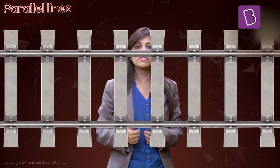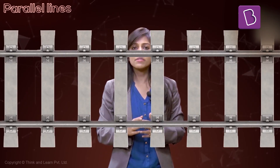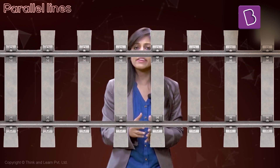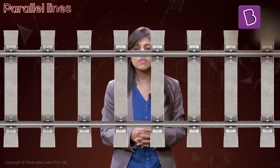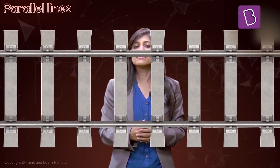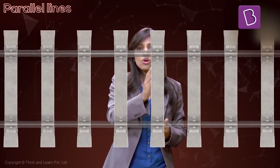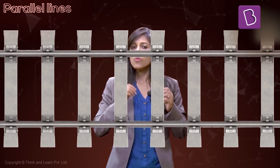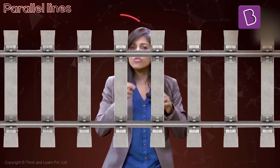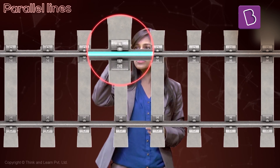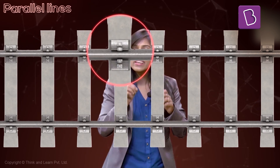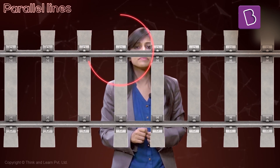To put things into action, let me show you a railway track, where you can see both intersecting lines and parallel lines. If you have a look at it, the ends of the track are parallel to each other — these are all parallel lines. And if you observe carefully, this line with that one — these are intersecting lines.